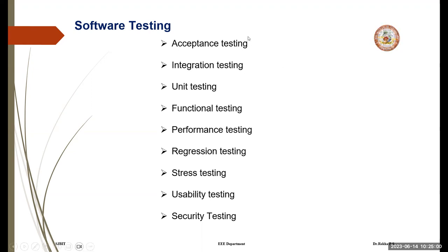First is acceptance testing, which verifies whether the whole system — whatever product is developed by a developer — works as intended. Next is integration testing, which ensures that software components or functions operate together. Since one product is often worked on by many people, each individual works on different modules. All modules should work together and operate perfectly as expected — this is called integration testing.